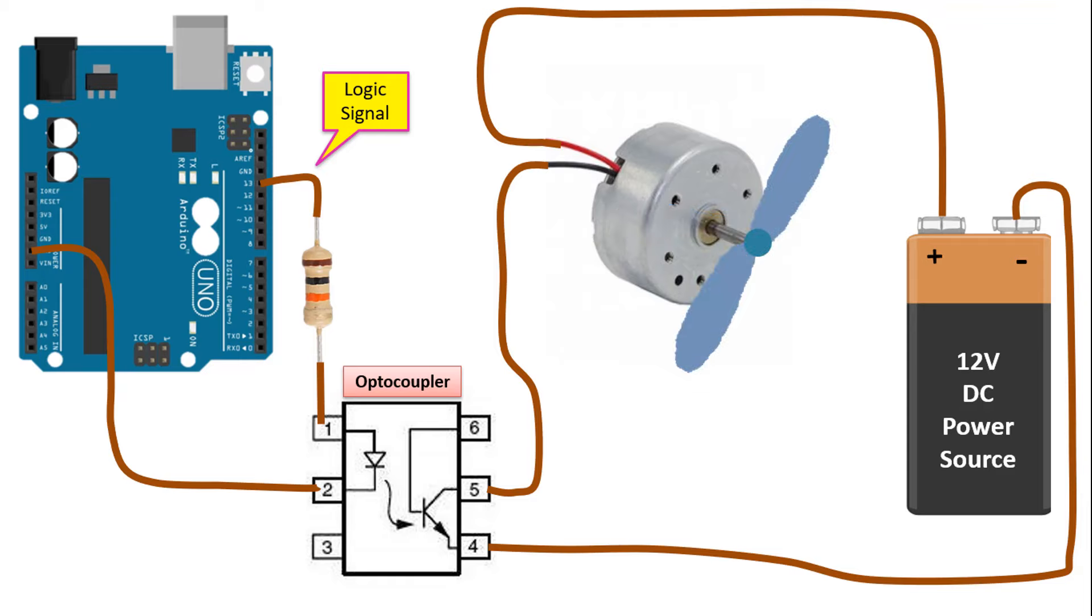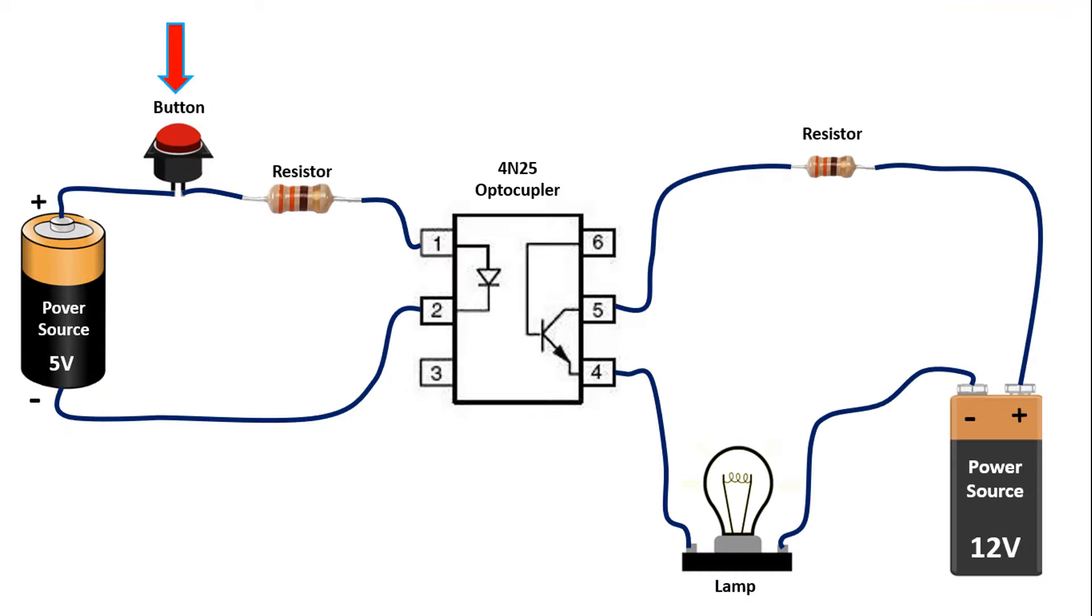The isolation between Arduino and the motor is provided by the optocoupler. It's impossible to directly control a motor that draws a high current with Arduino because Arduino gets damaged. But we can provide isolation with an optocoupler without an electrical connection between these two circuits. This is how the optocoupler works.